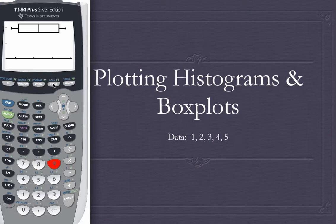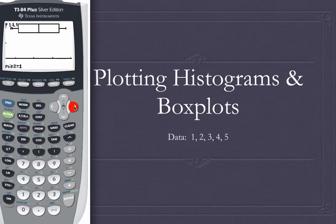To find out what these values are, we can just press trace and then scroll to find each one. It says minimum is 1, Q1 is 1.5, the median (Q2) is 3, Q3 is 4.5, and the maximum value is 5. And that's how we do histograms and box plots on the TI-84 calculator. Thank you.